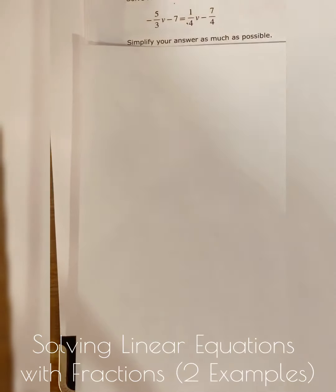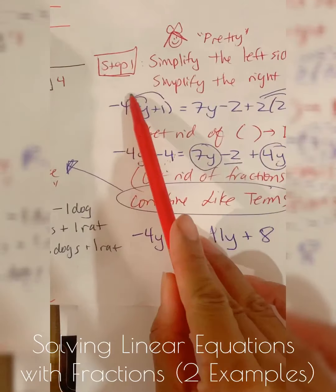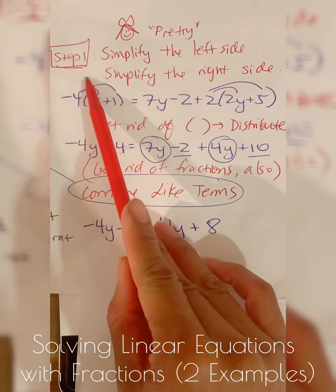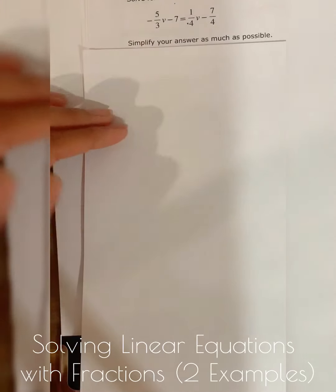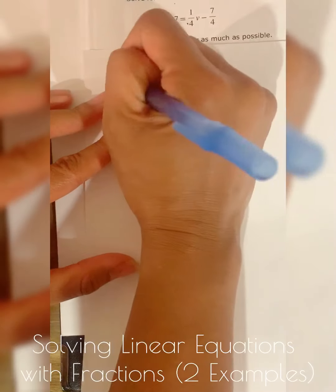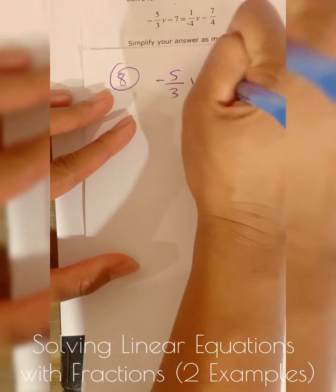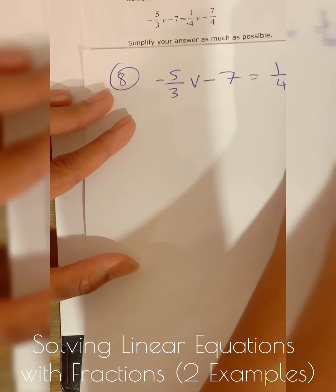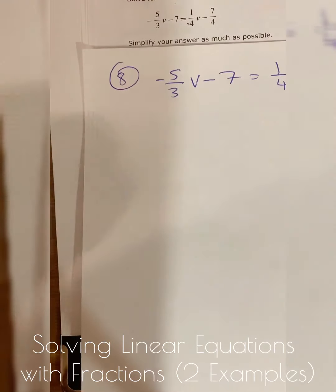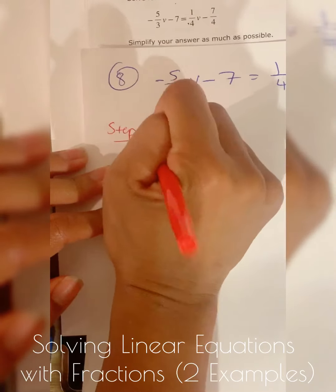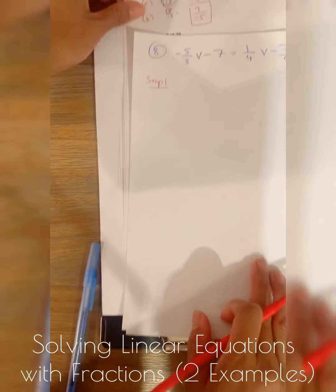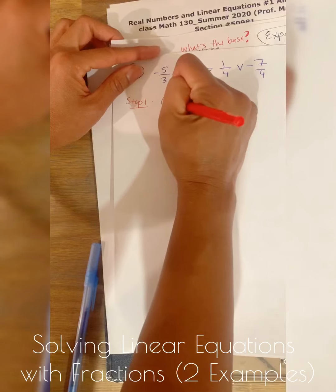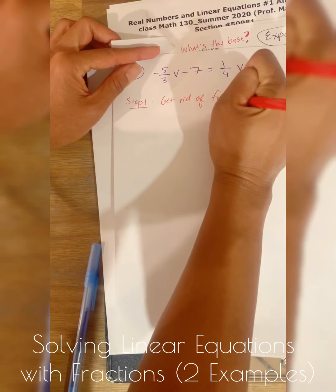In question seven I said the first step is to simplify, and one of the ways to simplify — aside from getting rid of parentheses — is to get rid of fractions. So the first step in question eight is that we want to get rid of the fractions. Step one is about simplifying the left side and the right side, so we want to make this look pretty.